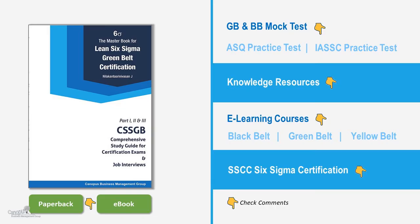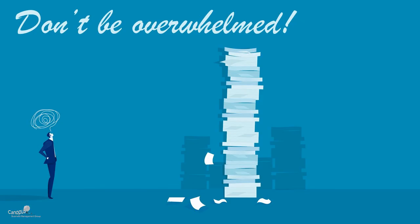What does D represent? D represents a Control Chart, which is a statistical process control tool used for running a kind of test on a process to find out if the process is stable or not. So that's not the right answer. Thank you.